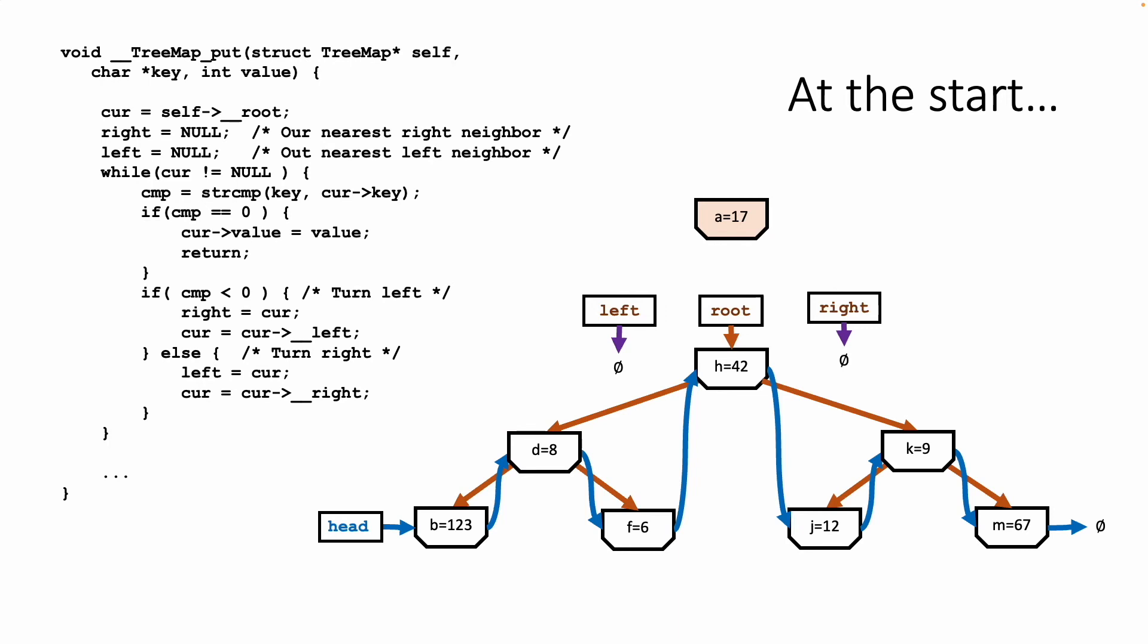So a equals 17, that's going to end up all the way down. We are going to compare it and turn left, to the left, to the left. I think there's a song and a dance about that. And so we remember right, which is the smallest number greater than. And right is not going to stay h equals 42, because we're going to compare a and d, and then we're going to go left again. Now right is going to follow us. Then we're going to compare a and b, and we're going to go left again, and right is going to follow us.